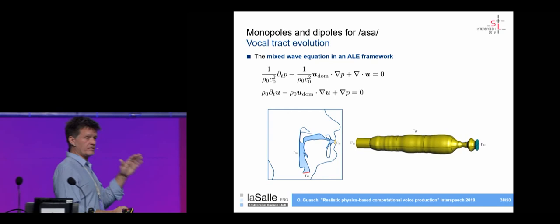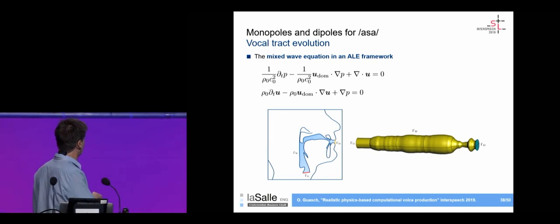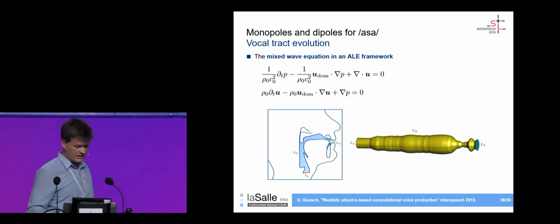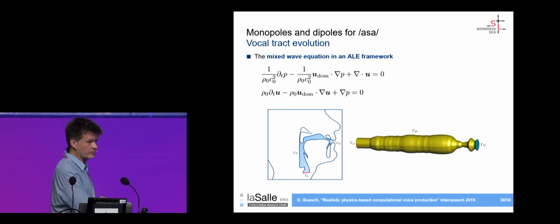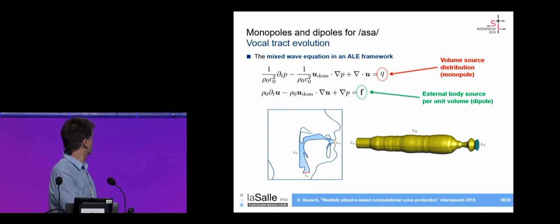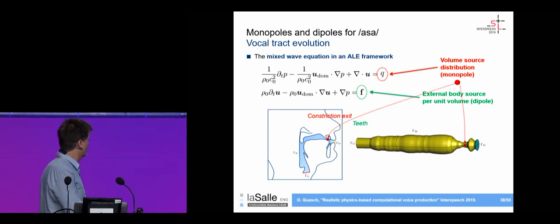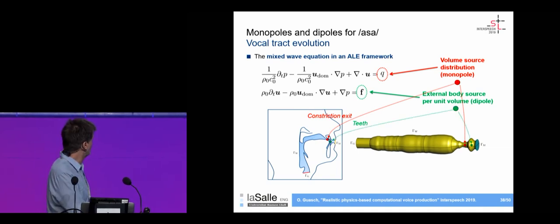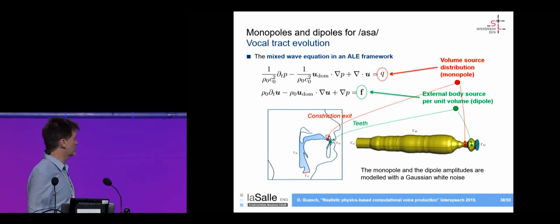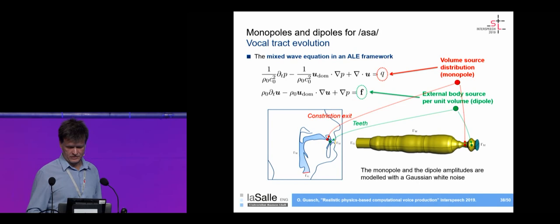Since the vocal tract is moving, we again solve the mixed problem. For vowels we input a boundary condition at the glottis, and to activate the aeroacoustic source we insert sound sources: a monopole (a source term in the continuity equation) at the exit of the constriction, and a dipole (a force in the momentum conservation equation) representing diffraction by the teeth. The amplitudes of both sources use Gaussian white noise — essentially translating 1D strategies into the finite element context.